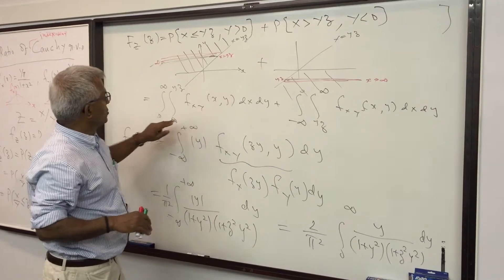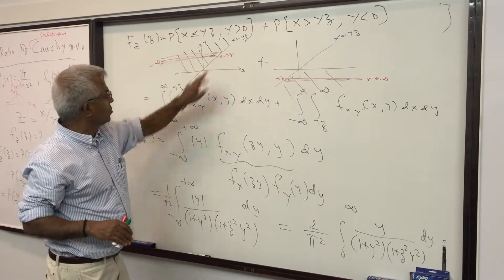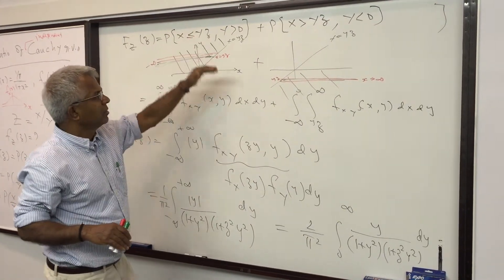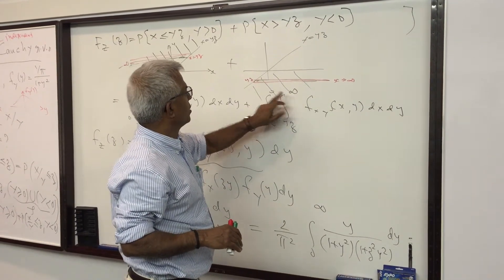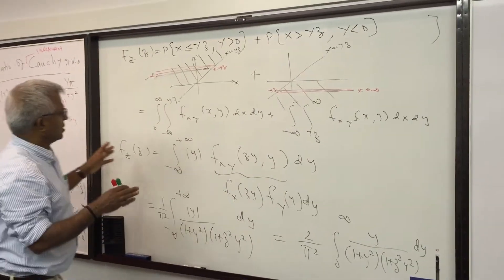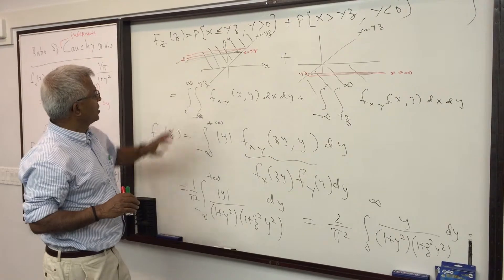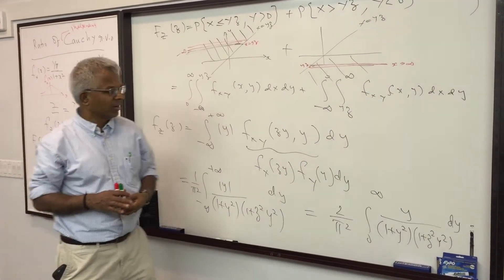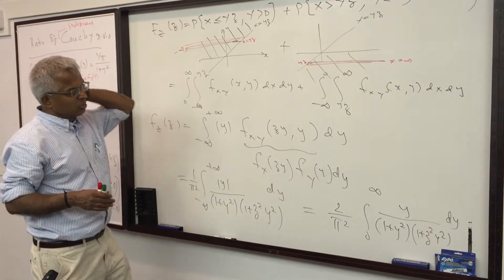So the distribution function is the integral of the joint density over two areas: for the Y-positive region, X goes from −∞ to Yz and Y goes from 0 to ∞; for the Y-negative region, X goes from Yz to ∞ and Y goes from −∞ to 0. Taking the derivative with respect to z gives the standard formula from textbook Chapter 6.